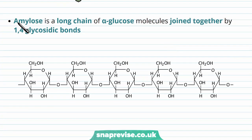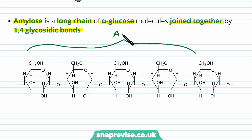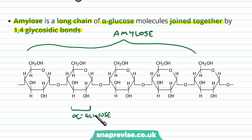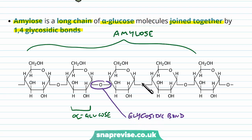So let's talk about amylose first. Amylose is a long chain of alpha glucose molecules, and they're joined together by 1,4 glycosidic bonds. Here is a long chain of amylose, and each of the hexagons is one alpha glucose. The polysaccharide itself is lots of alpha glucoses joined up in a chain through condensation reactions at a glycosidic bond.